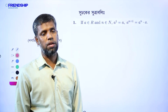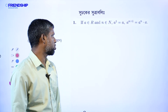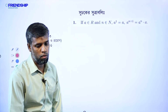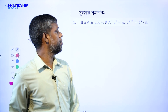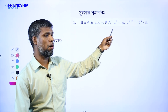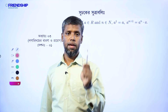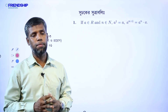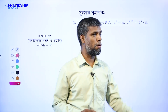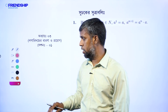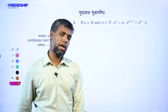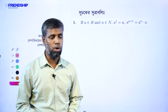So, let's learn the first step. If a belongs to R, if a is a real number, n belongs to N, then a to the power of 1 is a. We have a definition: a to the power of 1 is a, then a to the power of n plus 1 is a to the power of n into a. This third step is to compare meaning.